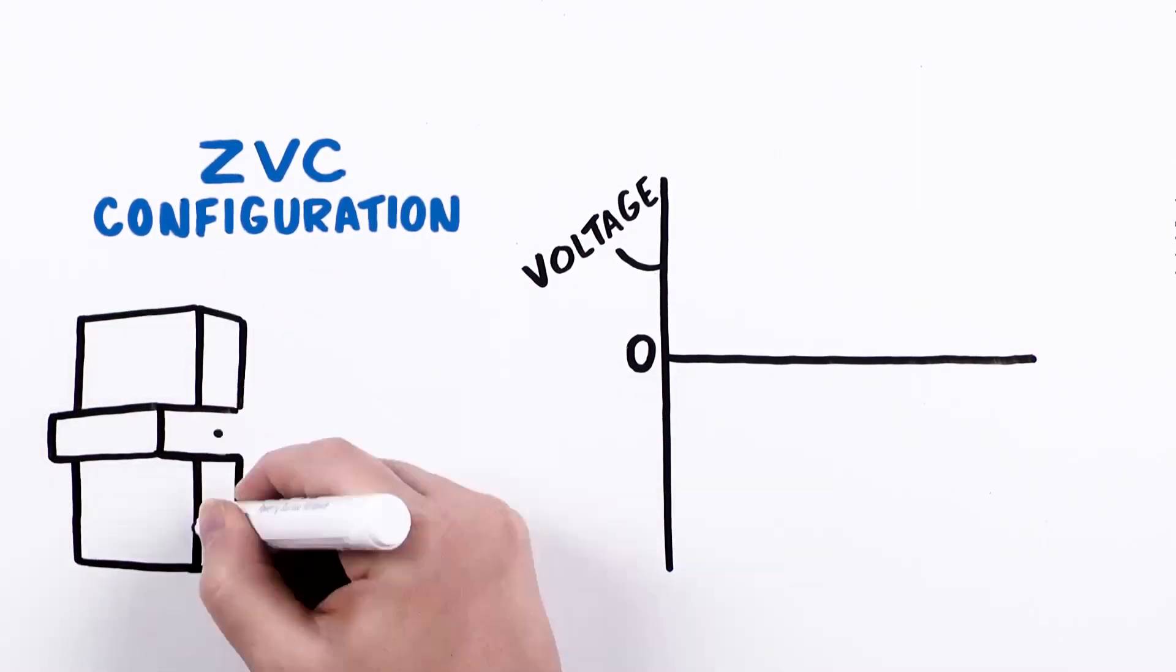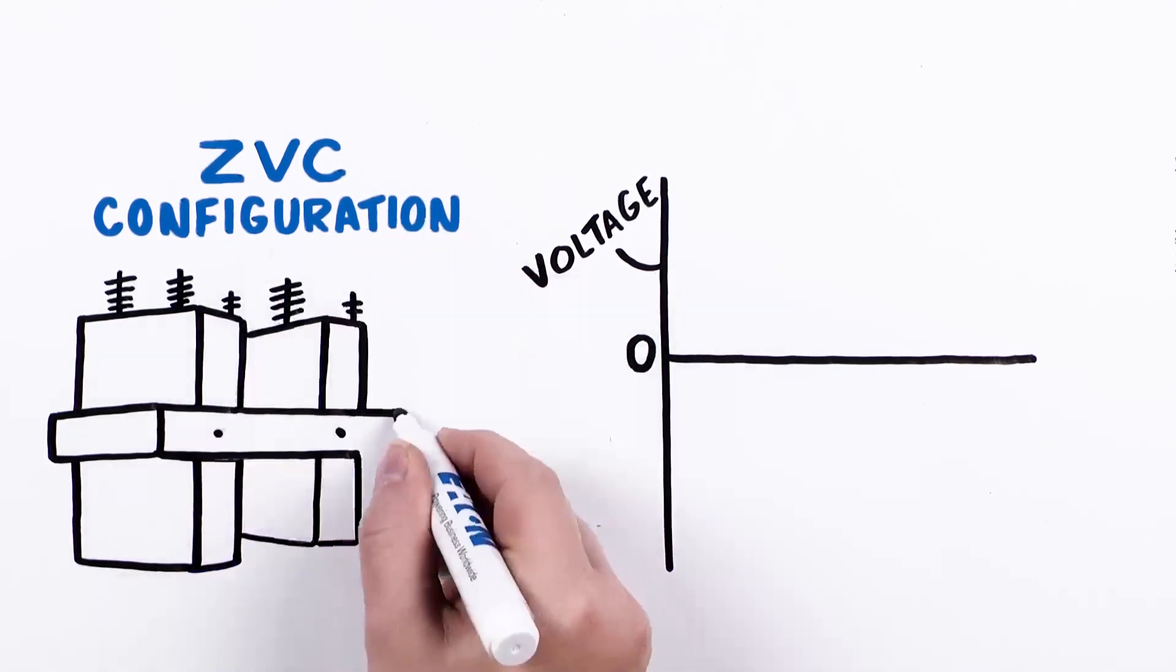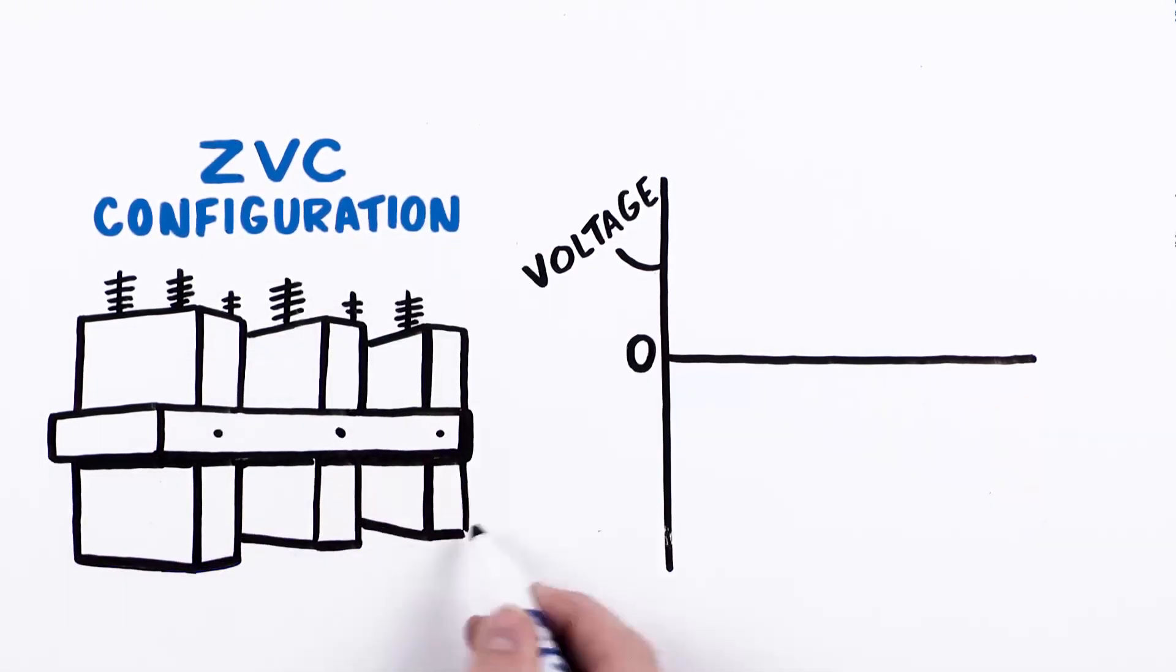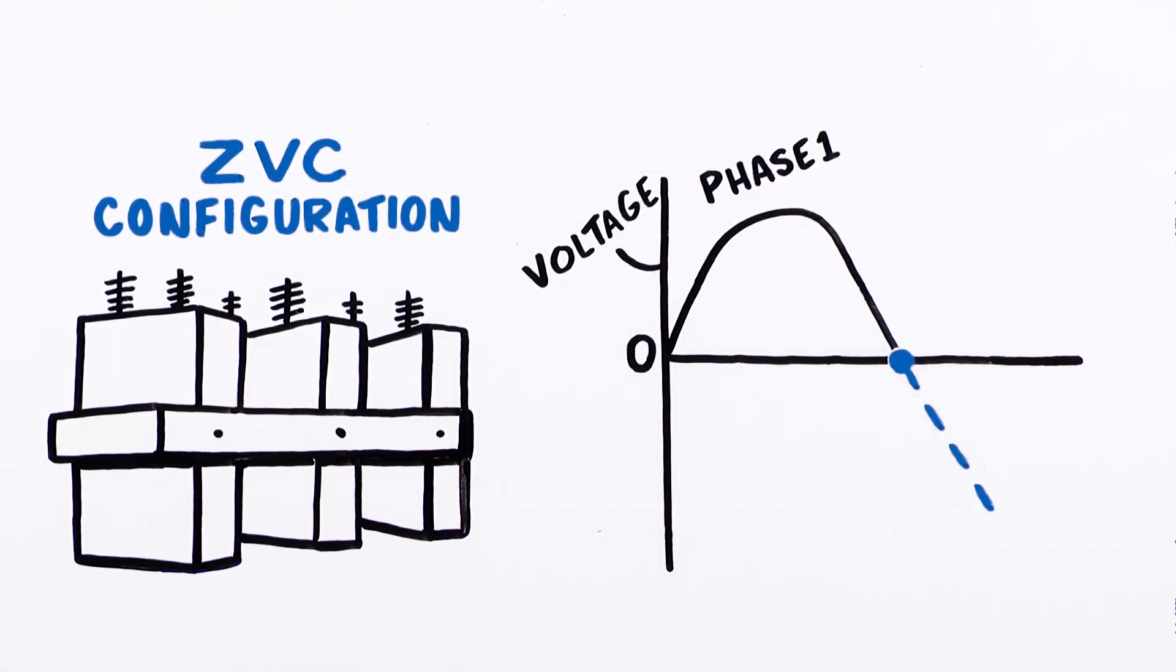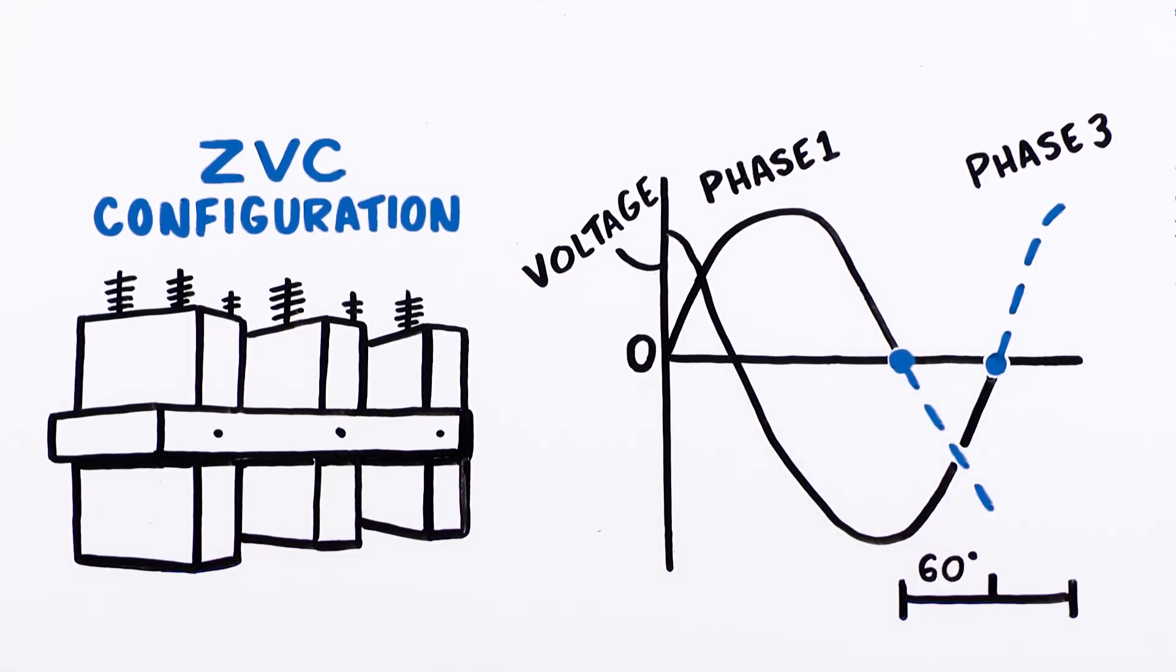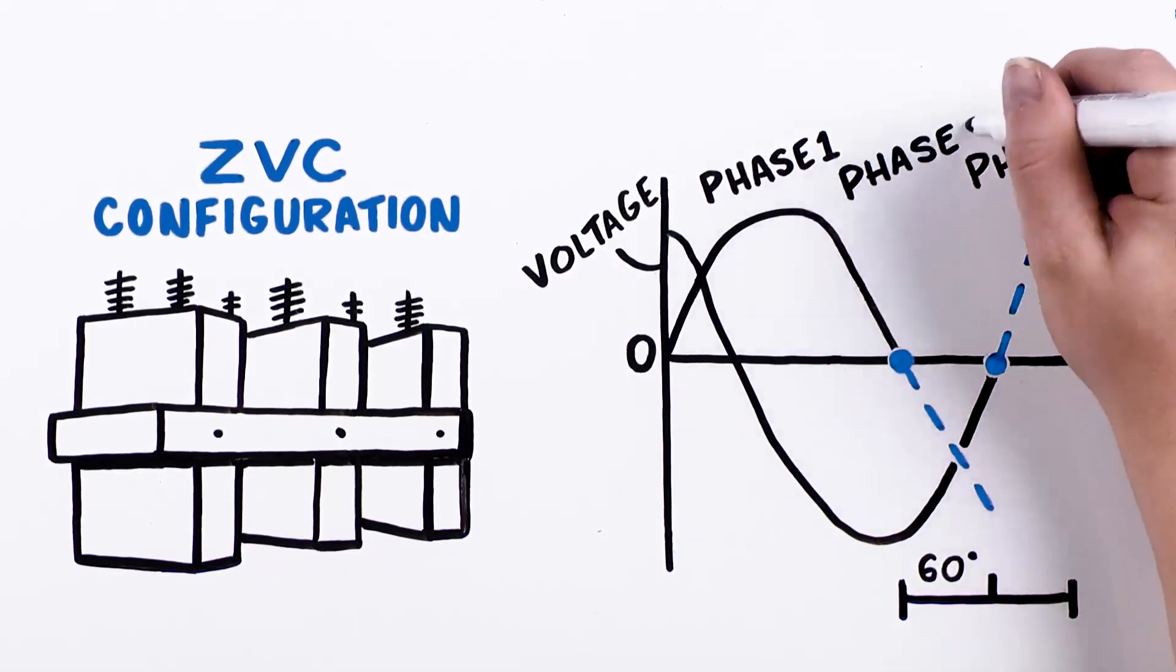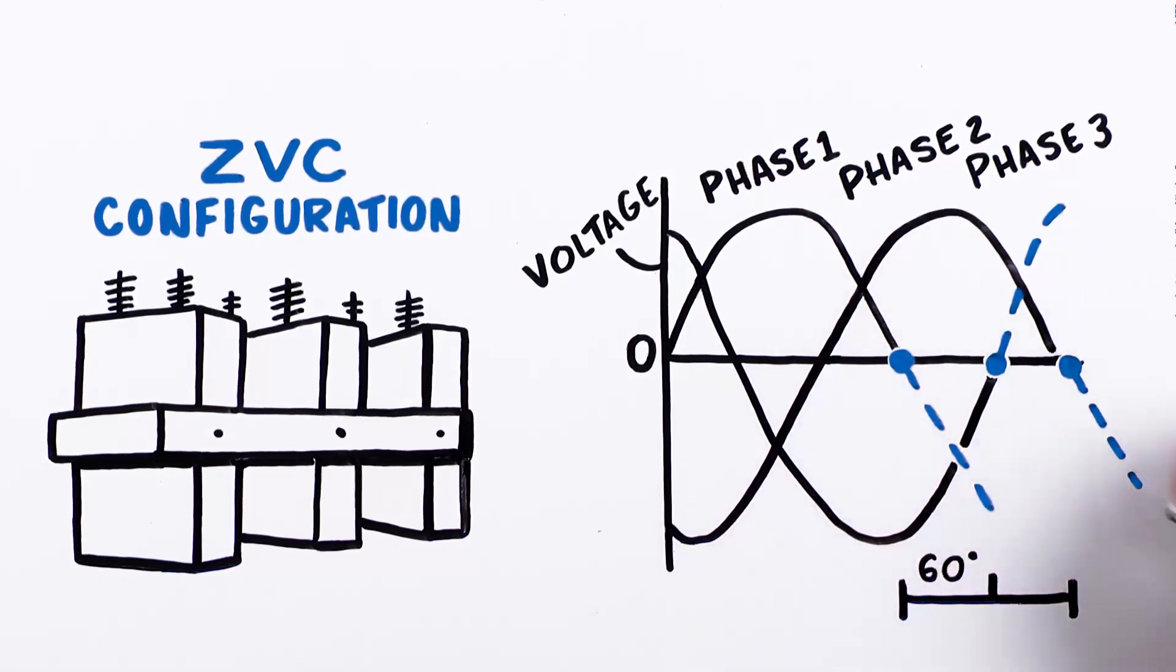Using a grounded Y electrical configuration example, a ZVC configured switch might first close the switch on phase one when it crosses zero. It will then close the switch on phase three 60 electrical degrees later at its zero point, and finally close the switch on phase two 120 electrical degrees after phase one switch is closed.